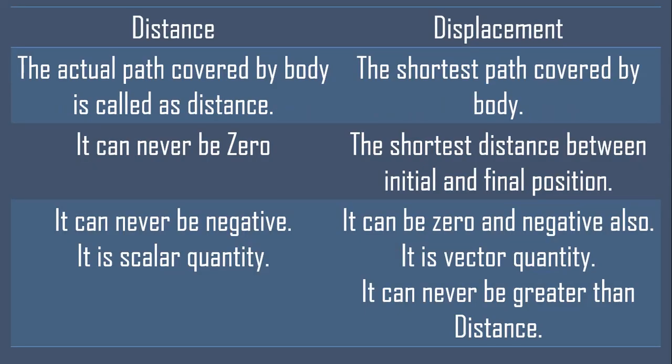Difference between distance and displacement: Distance is the actual path covered by a body — it can never be zero, never be negative, and it is a scalar quantity. Displacement is the shortest distance between initial and final position — it can be zero, it can be negative, and it can never be greater than distance.